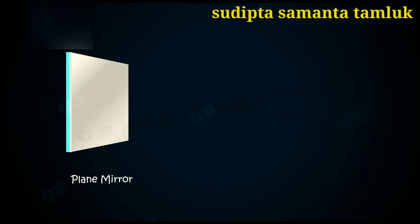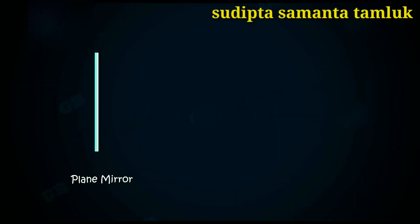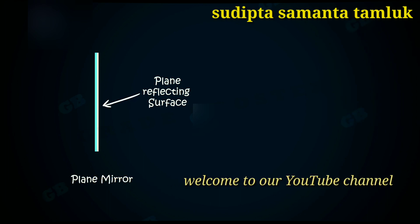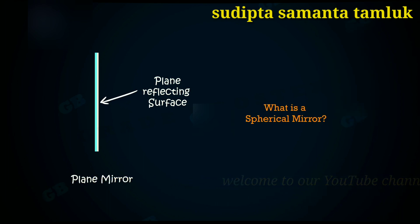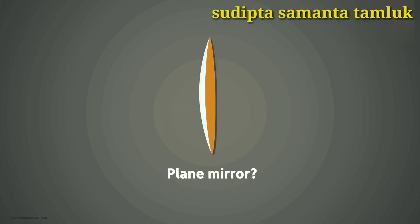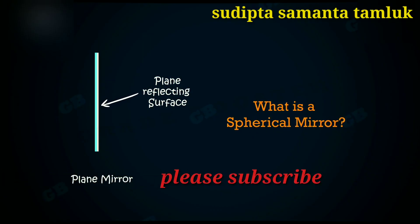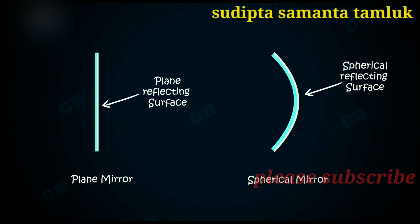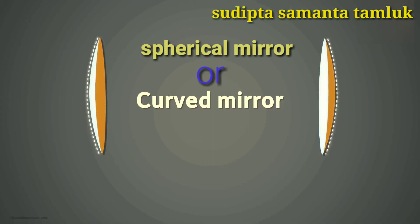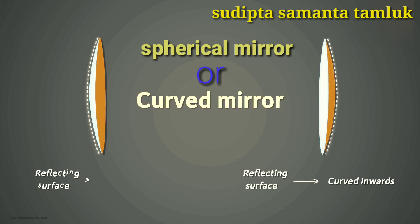Spherical mirrors: we know a plane mirror is a mirror with a plane surface. But what is a spherical mirror? This is also a mirror as it has a smooth reflecting surface, but it is not a plane mirror as this reflecting surface is not flat. If the reflective surface of the mirror is spherical, it is a spherical mirror. The reflecting surface of one mirror is curved inwards, whereas the other is curved outwards.